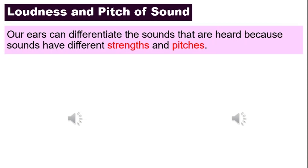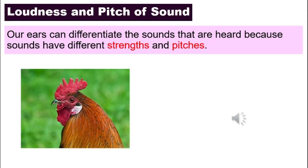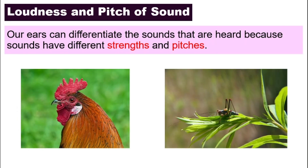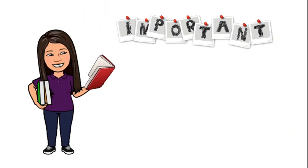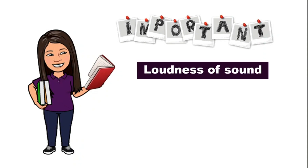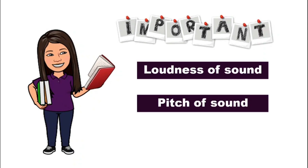Our ears can differentiate the sounds that are heard because sounds have different strengths and pitches. Can you guess what these sounds are? This is the sound of a rooster, and this is the sound of a cricket. We can identify these sounds because they have different strengths and different pitches. Two very important terms we are going to look at in this video are loudness of sound and pitch of sound.